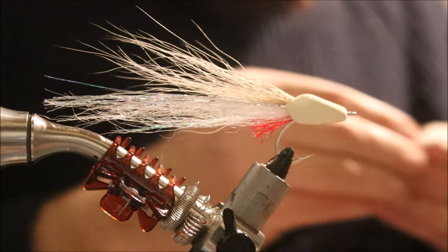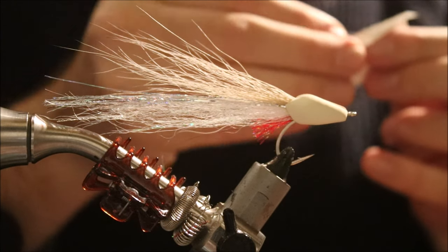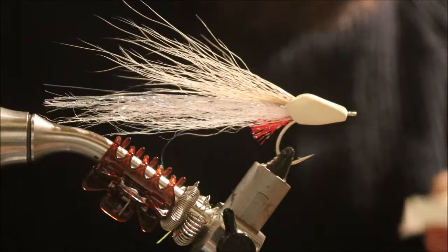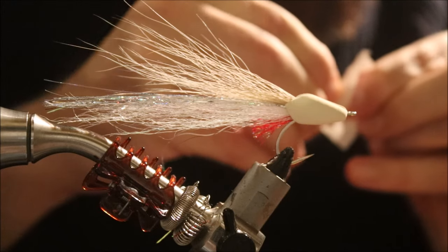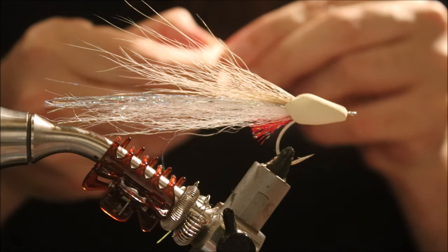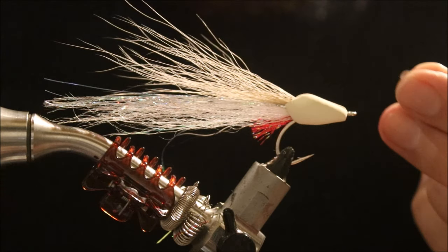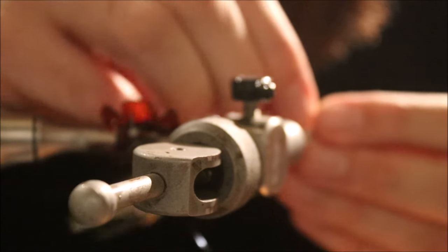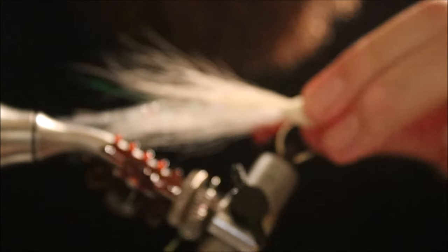Right, so that's basically the tying done. It's fairly simple, fairly straightforward. I'm going to just stick on an eye, use whatever eyes you like, flat tape, dumbbell eyes. I'm going to position them roughly in the middle of the fat part of the bug body, give it a wee squeeze.